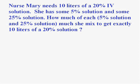Nurse Mary needs 10 liters of a 20% IV solution. This happens all the time. She goes to the closet and she doesn't have any 20% IV solution. She only has some 5% solution and some 25% solution. So she needs to mix them in the right fashion, some of the 5% solution and some of the 25% solution, so that she can get exactly 10 liters of a 20% solution. That's what the patient needs. She has to mix it up. So how much of each 5% and 25% solution should she mix?